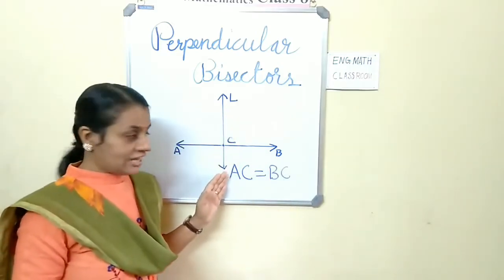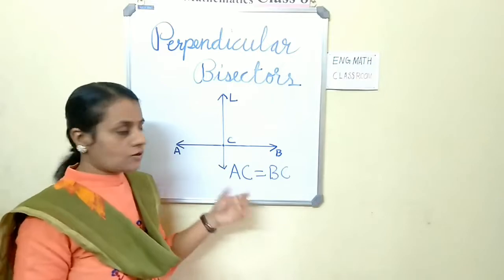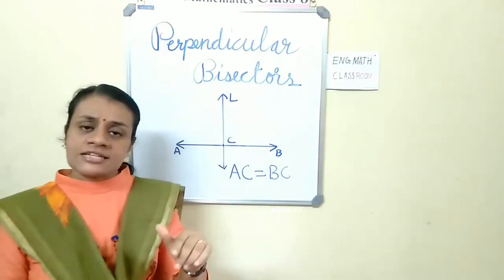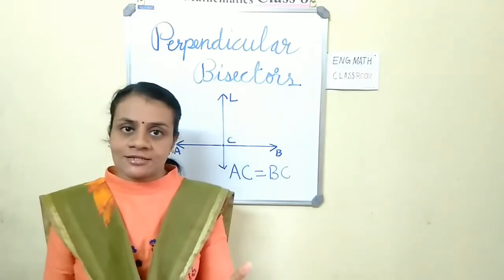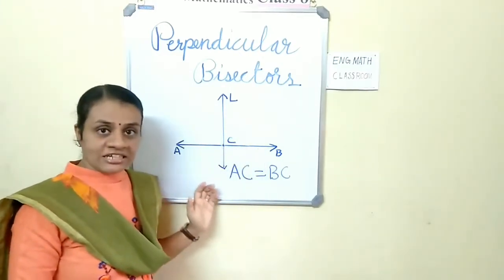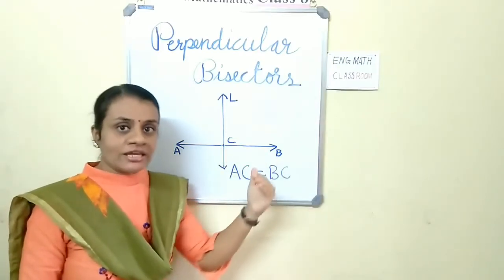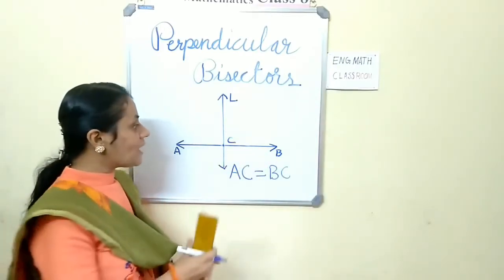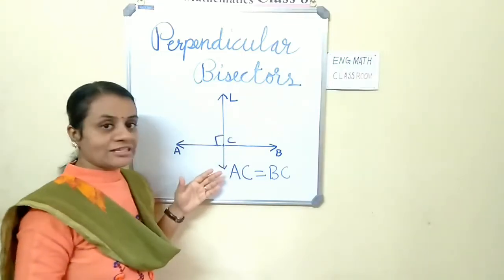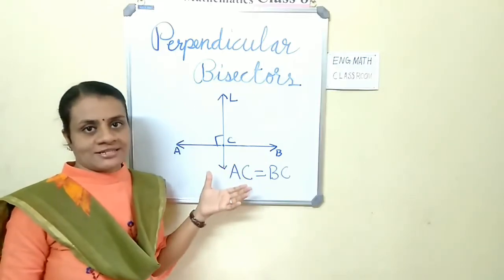Here, line L is a bisector of AB. Now, what is a perpendicular bisector? A line which divides another line into two equal parts making an angle 90 degrees.